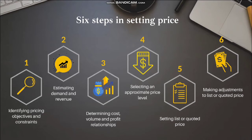The fourth step is selecting an appropriate price level, used as a reasonable starting point. There are four common approaches: demand-oriented approach — which includes skimming and penetration pricing — cost-oriented, profit-oriented, and competition-oriented approach. The fifth step is setting the list or quoted price.